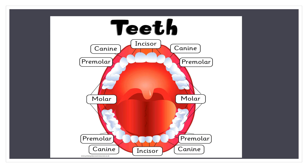Now I will go over the various types of teeth again. The first is the incisor — there are 8 incisors total. The middle 4 teeth of the upper and lower jaw are called incisors. Then the canines — there are 4 in number. The pointed teeth just outside the incisors are the canines.